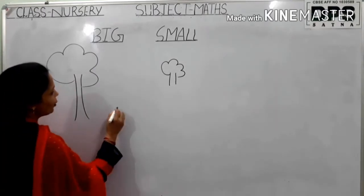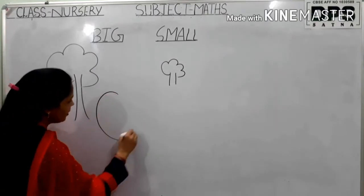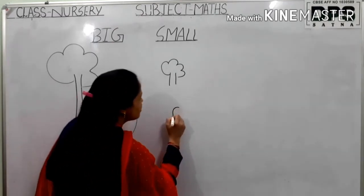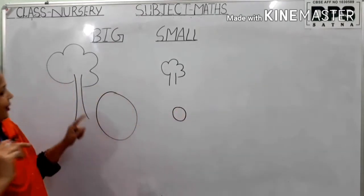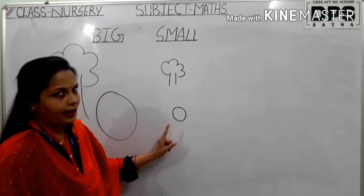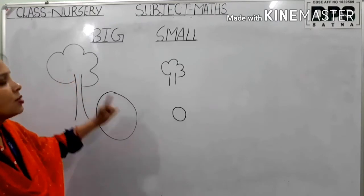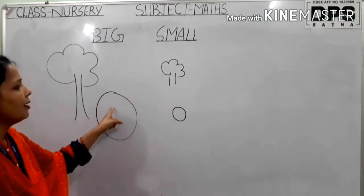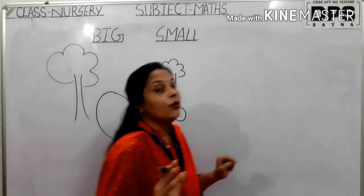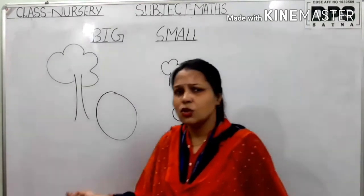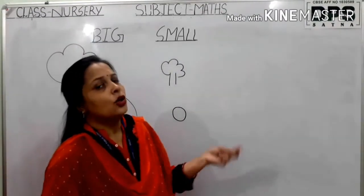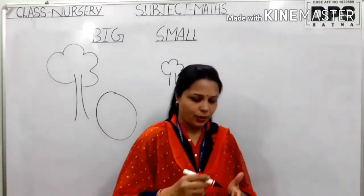Now look here. Here is a big circle and here is a small circle. So this is called big, and this is called small. Big, small. You identify now which one is big and which one is small. Because it's so easy to see — whatever looks big to us we call big, and whatever looks small we call small.